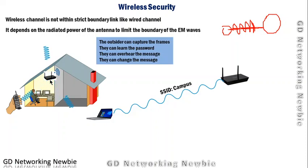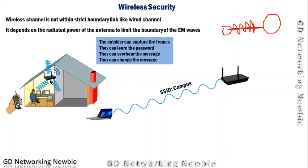An outsider can actually capture these frames. From these frames they can learn the password, overhear the message — whatever message you transmit can be received and interpreted by the outsider. They can also change the message itself: receive it, change it, and then transmit it to the intended destination. This is not good for us.